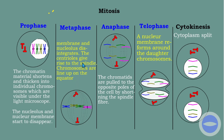The chromosomes are lined up at the equator, and the spindle fibers produced by the centrosomes attach to the centromere of each chromosome. During anaphase, the chromatids are pulled to the opposite poles of the cell by the shortening of the spindle fiber. The spindle fibers were attached to the centromere, so now they pull the chromatids apart — the chromatids separate during anaphase.